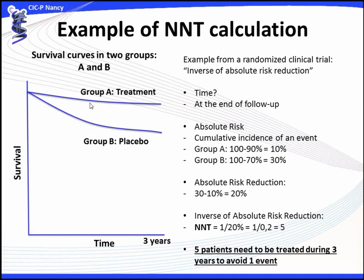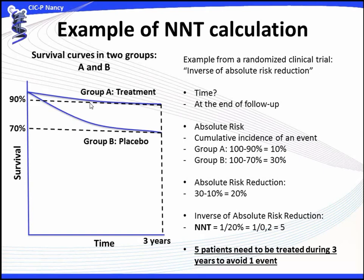Here is an example of the number needed to treat calculation. We have two survival curves: group A, the treatment group, and group B, the placebo group. They were followed for three years. The treatment group had a cumulative incidence of event of 10% (100% minus 90%), and group B had a cumulative incidence of event of 30% (100% minus 70%). The absolute risk reduction is 30% minus 10%, and the number needed to treat is 1 divided by 20%, which equals 5.